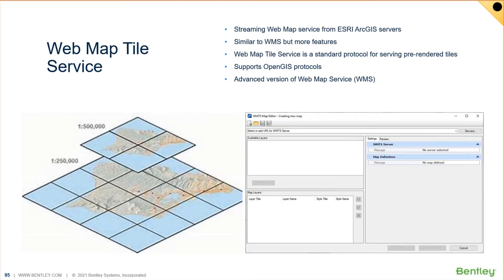Web Map Tile Service — there is something very similar to it: WMS, Web Map Service, which has been around in MicroStation for a number of years. To give you the 22-second history of the difference between the two: back in the late 90s, a group called the OGC, the Open Geospatial Consortium, started developing a lot of standards, like CAD standards for web mapping. It's probably one of the oldest standards out there, used for web mapping, imagery, and that kind of thing.